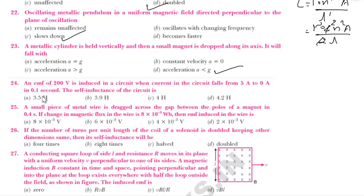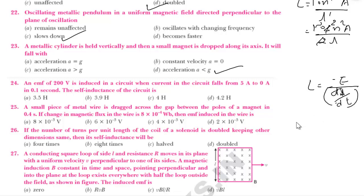An EMF of 200 volt is induced in a circuit when the current falls from 5 ampere to 0 ampere in 0.1 second. Using L = −E / (ΔI/ΔT): L = 200 / (5/0.1) = 200/50 = 4 henry. The answer is 4 henry.